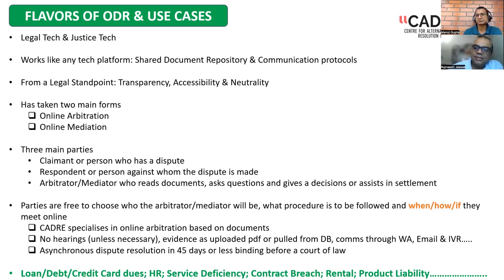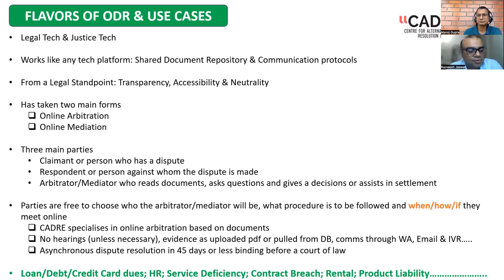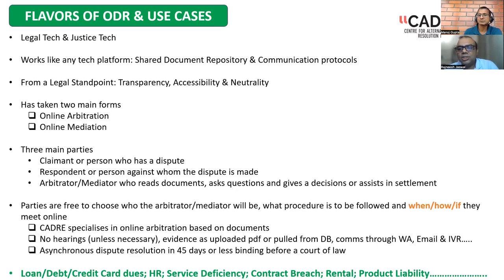There are three main parties in the ONDC framework: the claimant — the person who ordered a pizza and is not happy — the respondent — the pizza company, delivery person, or payment gateway involved — and the arbitrator or mediator who reads documents, asks questions, gives a decision, and assists in settlement. Mediation is a process where you go to someone and say, 'Can you help us arrive at a center point where both parties are happy?' — it's a softer process. Arbitration is a harder, binding process. Either party can walk away from mediation but not from arbitration.